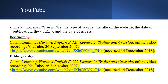For YouTube videos: Author/Channel Name, Title in Italics, type of source (online video recording), YouTube, date of publication, URL, accessed day month year. For example: Cosmo Learning, Harvard English E-129 Lecture 2: Troilus and Cressida, online video recording, YouTube, 26 September 2007, <URL>, accessed 14 December 2018. In the bibliography, do the exact same thing without a full stop. If the author is a person, invert their name.